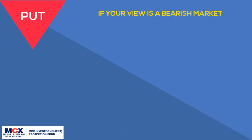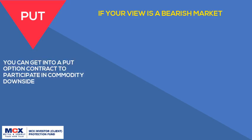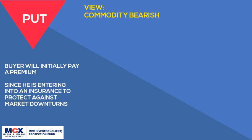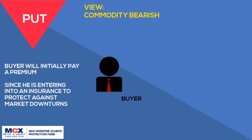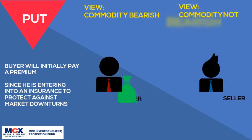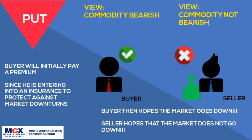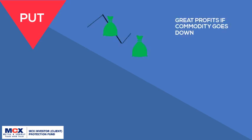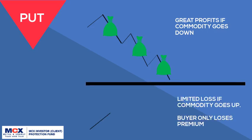A put option is an instrument that provides the advantage of participating in a bear market when the underlying commodity price is expected to go down. If your view is a bearish market, you can buy a put option to participate in the commodity downside. If the downside emerges, you will benefit from holding a long put option. The buyer initially pays a premium to protect against market downturns with no obligation. The buyer hopes the market falls — he is bearish. The seller hopes the market does not fall — he is bullish. Put options are popular because they provide great profit if the underlying commodity price goes down, while the loss is limited if prices go up. A put option buyer only loses the premium.